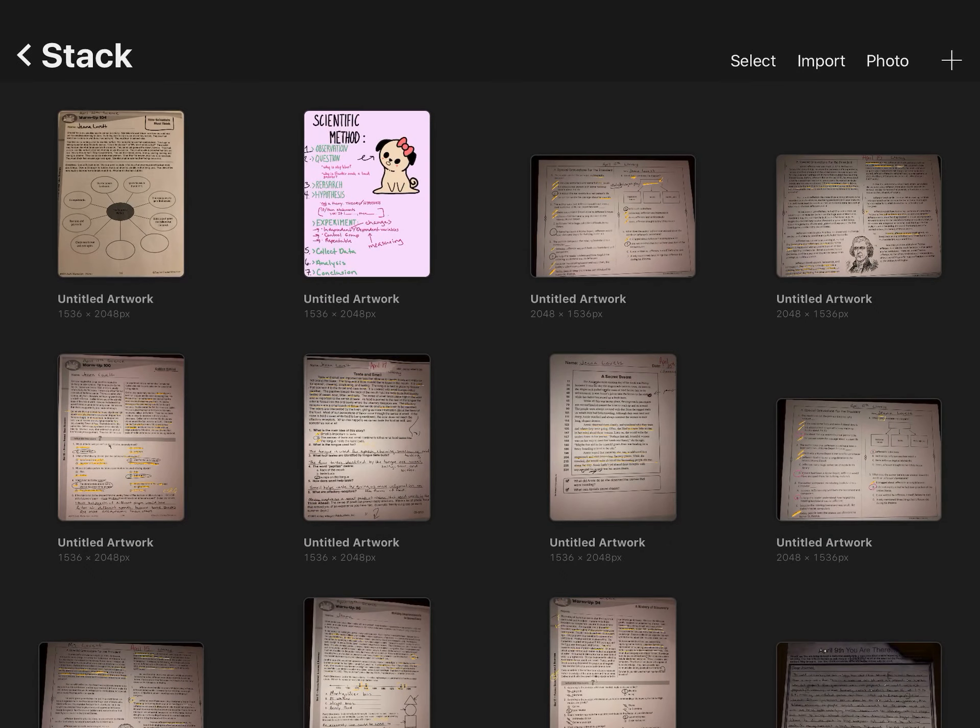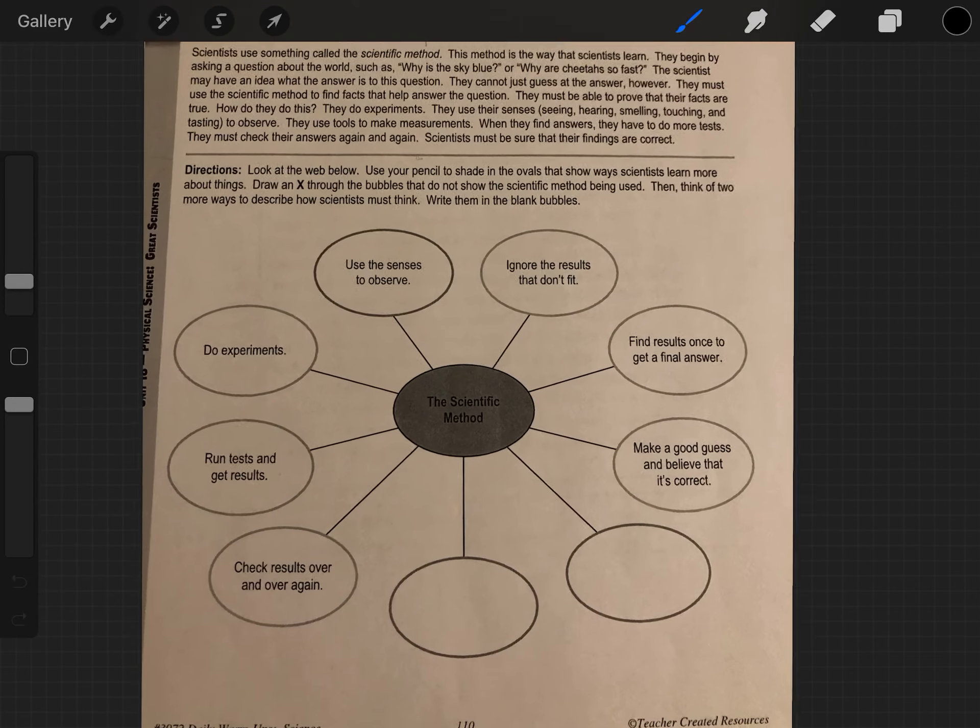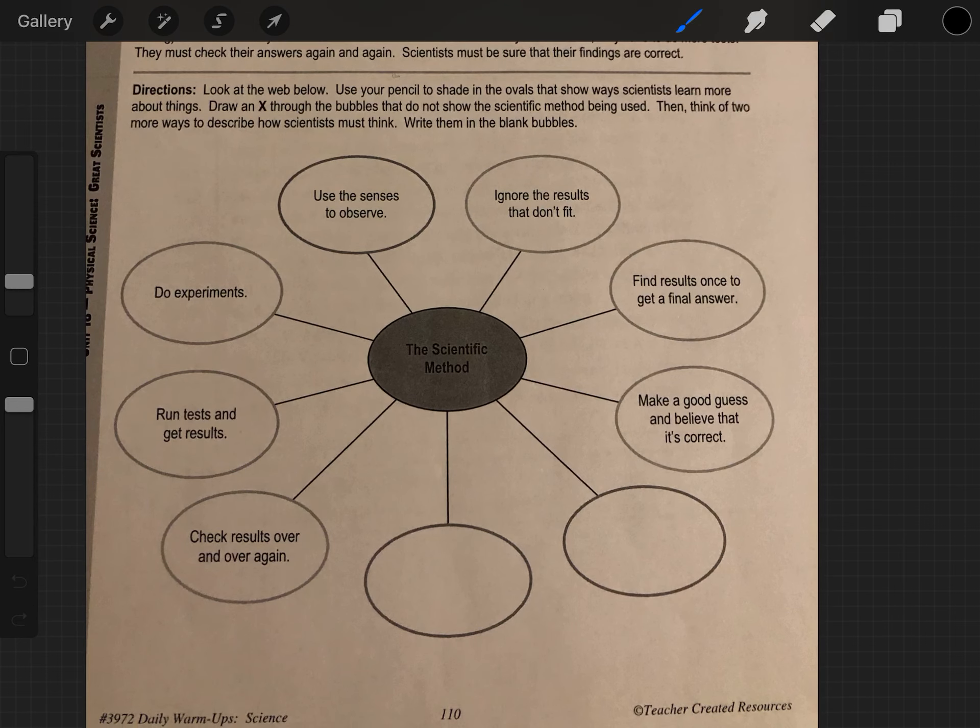Now that we have covered the scientific method, we will move on to our questions. Directions: look at the web below. Use your pencil to shade in the ovals that show ways scientists learn more about things. Draw an X through the bubbles that do not show the scientific method being used. Then think of two more ways to describe how scientists must think. Write them in the blank bubbles.